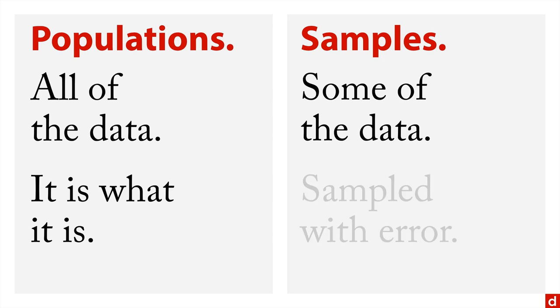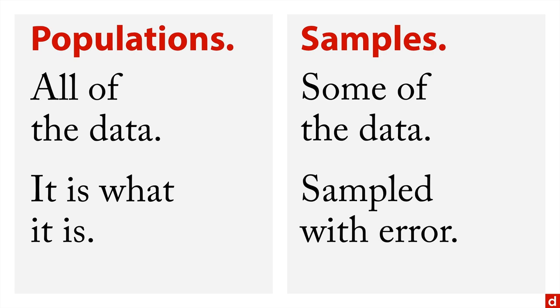The trick is, samples are sampled with error. You sample one group and calculate the mean, and it's not going to be the same if you do it a second time. And it's that variability in sampling that makes inference a little tricky.